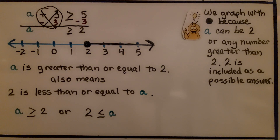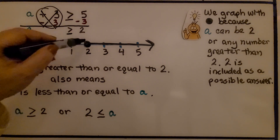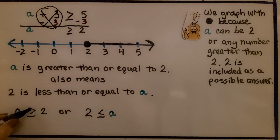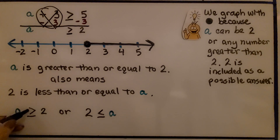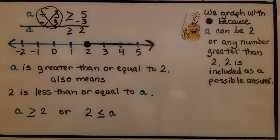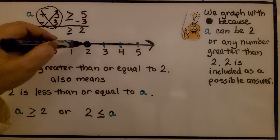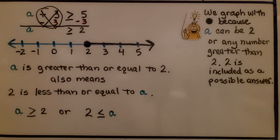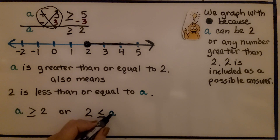A is greater than or equal to 2 also means 2 is less than or equal to A. We can reverse it: instead of 2 on the right and A on the left, we put the 2 on the left, A on the right, and flip the inequality sign around. Both forms are equivalent. We graph with a closed dot because A can be 2 or any number greater than 2 — 2 is included as a possible answer.